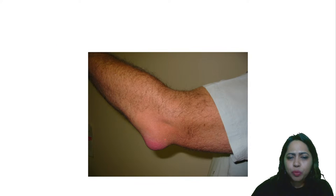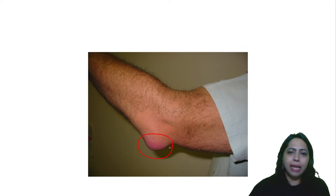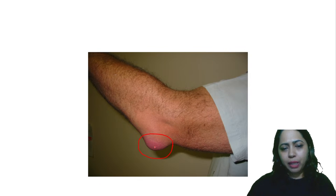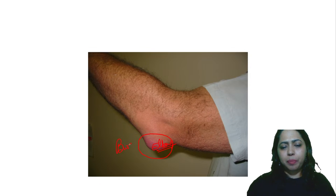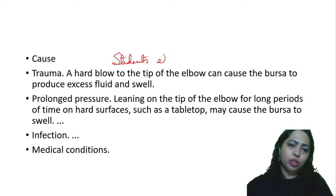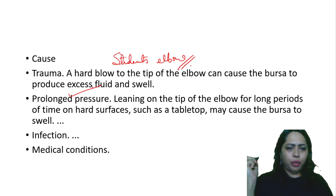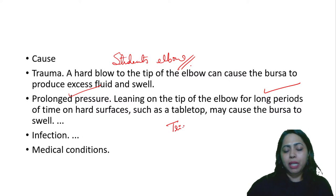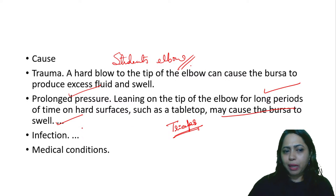Here you can see a swelling at the elbow — neither at the medial nor lateral epicondyle but right in the center. This is the bursa that has become inflamed — bursitis — also called student's elbow. Prolonged pressure on the bursa causes inflammation and pressure on the surrounding muscles, including the triceps, which is protected by the bursa. The swollen bursa needs to be checked.